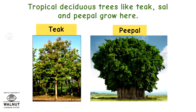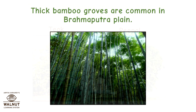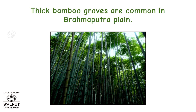Tropical deciduous trees like teak, sal, and peepal grow here. Thick bamboo groves are common in the Brahmaputra plain.